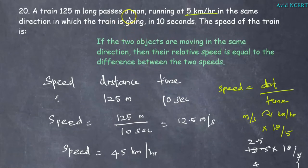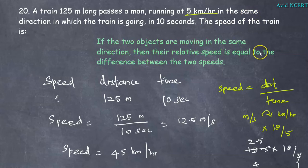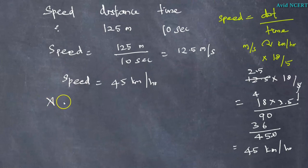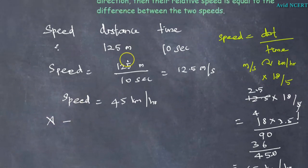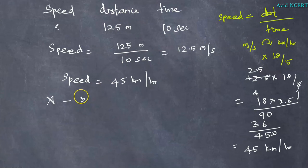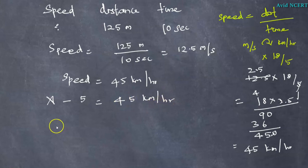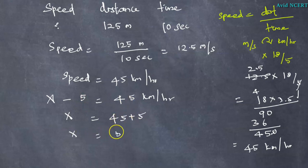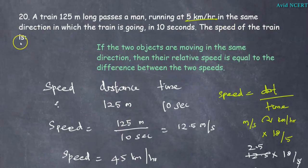The man is running at 5 kilometers per hour in the same direction. When two objects move in the same direction, the relative speed equals the difference of the two speeds. So if the speed of the train is x, then x minus 5 equals 45. Therefore x equals 45 plus 5, which is 50 kilometers per hour. The speed of the train is 50 kilometers per hour.